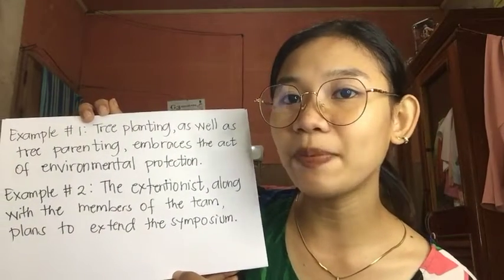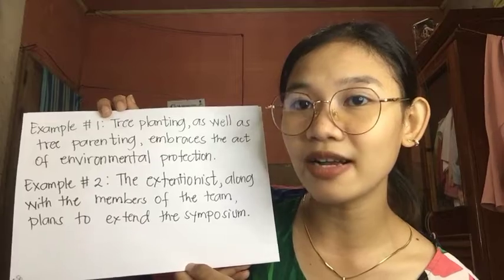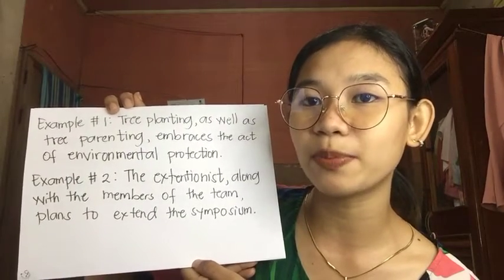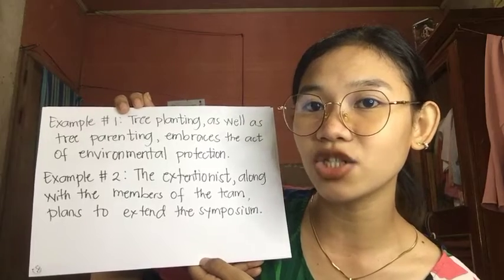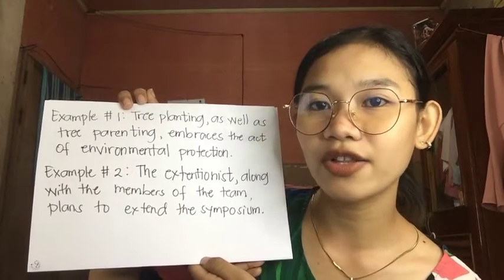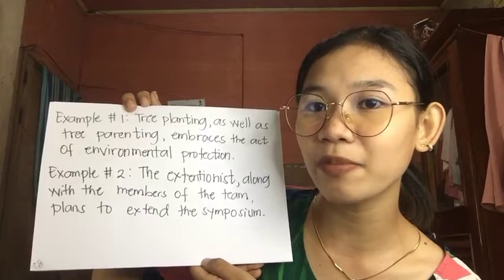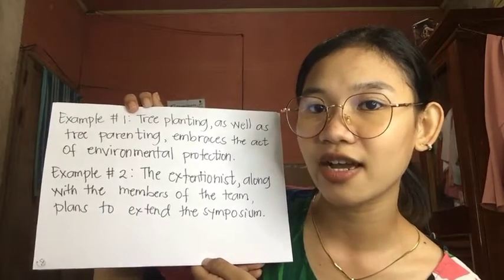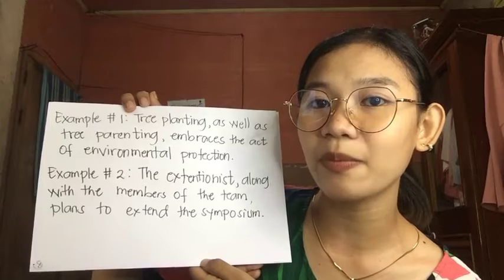Rule number eight: when the subject in a sentence is interrupted by an intervening phrase introduced by 'including,' 'along with,' 'together with,' 'as well as,' 'beside,' etc., the verb must still agree with the simple subject. For example, 'Tree planting as well as tree parenting embraces the act of environmental protection.' Second: 'As long as we have, a member of the team plans to extend the symposium.' The verb agrees with the simple subject 'tree planting.'